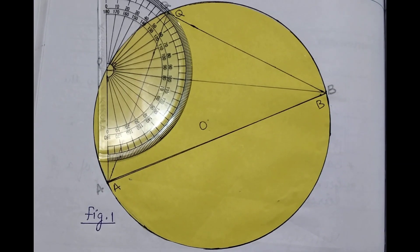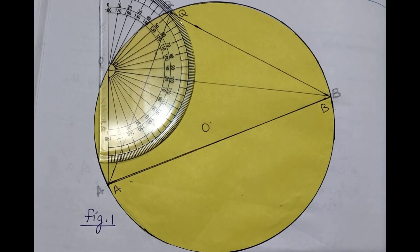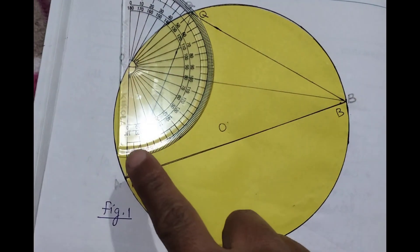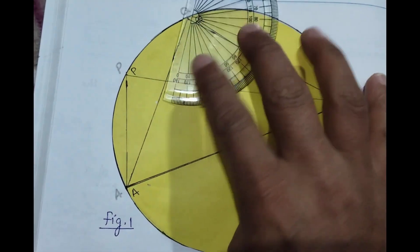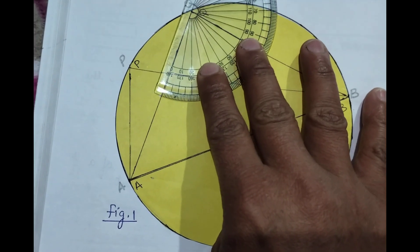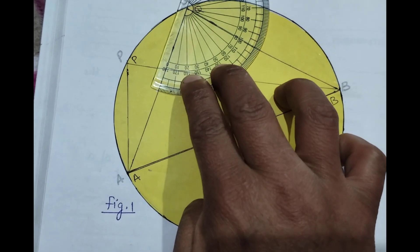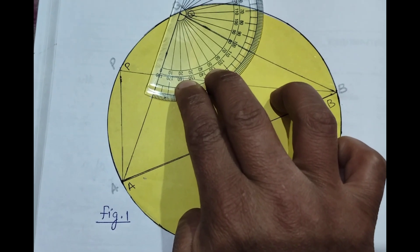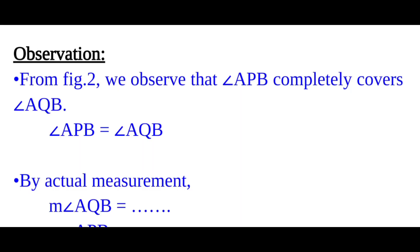After verifying by superimposition, we verify with actual measurement. We measure angle APB and find it is 80 degrees. We measure angle AQB and find it is also 80 degrees. So angle APB equals angle AQB. Observation: as seen from figure 2, angle APB completely covers angle AQB, which means angle APB is equal to angle AQB.